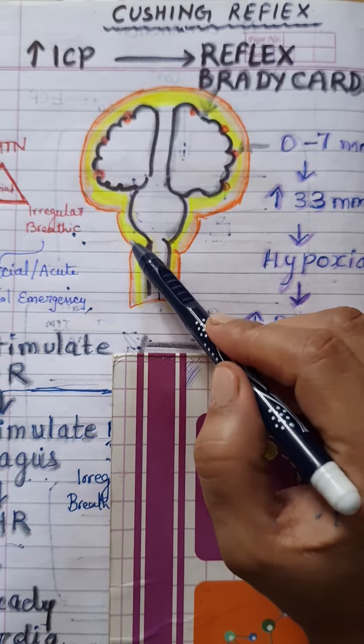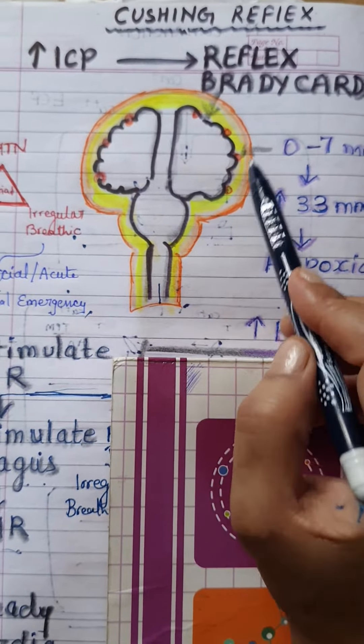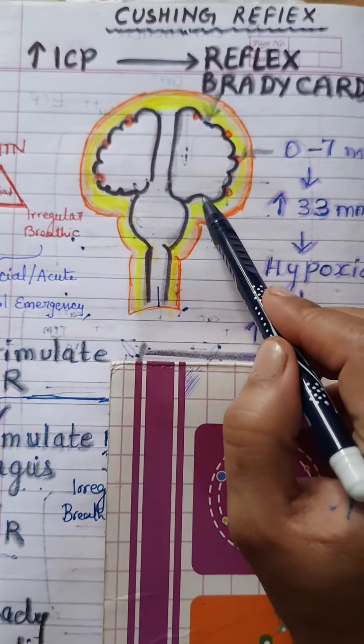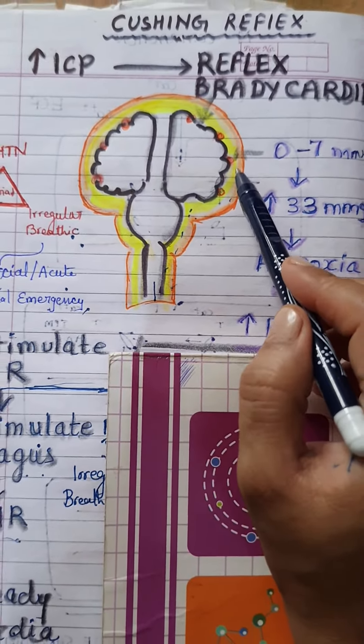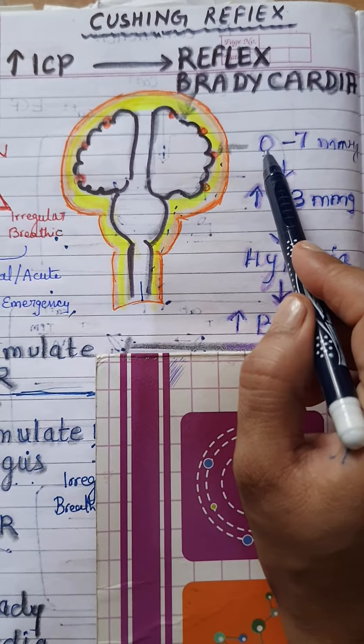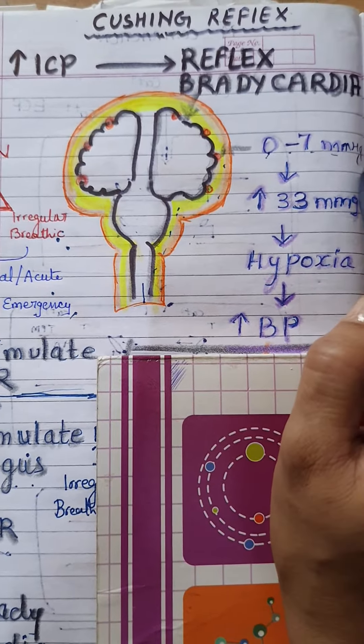And this is covered by the meninges and meninges contain a small amount of fluid which is known as cerebrospinal fluid or CSF. CSF creates a pressure and its normal range is between 0 to 7 mm of Hg.